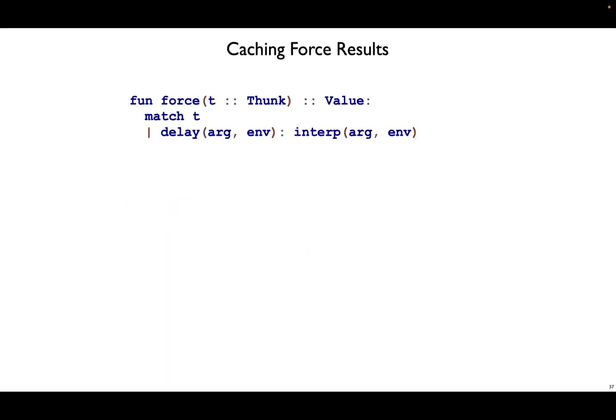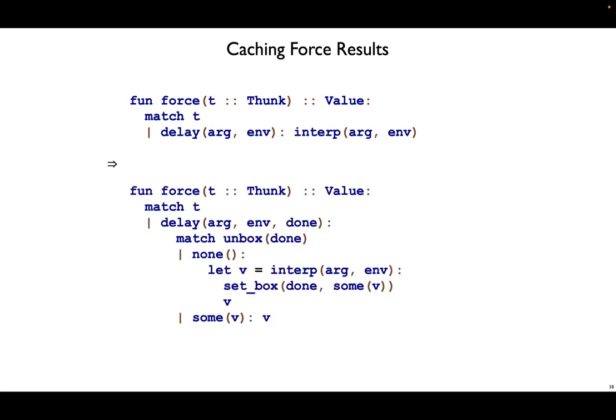And then our force function needs to change. So here's what we had before. Afterwards, we have the done field as well. The first step is to check if we have something inside the done field. If we don't, then interpret the argument, update that box so we don't need to interpret in the future, and then return the value. If we did have something in the done field, then just return that. Unpack and return.